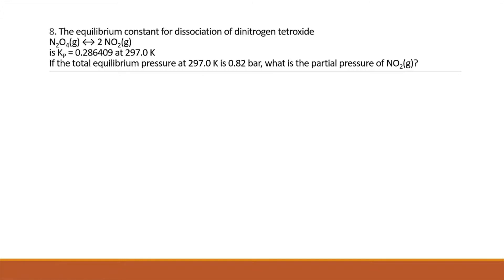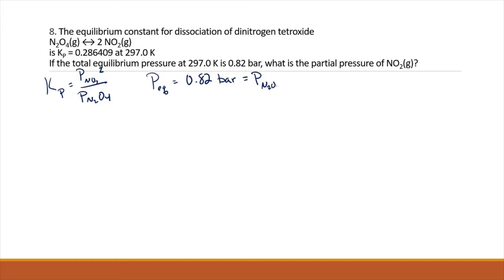Our last question: the equilibrium constant for the dissociation of dinitrogen tetroxide is given at 297 Kelvin. If the total equilibrium pressure at 297 Kelvin is 0.82 bar, what is the partial pressure of NO2? Our Kp equals the partial pressure of NO2 squared divided by the partial pressure of N2O4. We also know the total equilibrium pressure is 0.82 bar, which equals the partial pressure of N2O4 plus the partial pressure of NO2. Let's say the partial pressure of NO2 equals X, so the partial pressure of N2O4 must be 0.82 minus X.